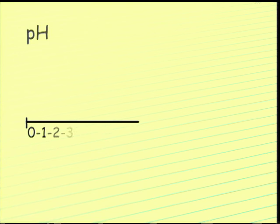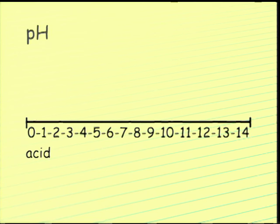The pH scale runs from zero, which is most acidic, to 14, which is most basic. The pH scale is a log scale, which means a change of one pH unit equals a tenfold change in concentration.